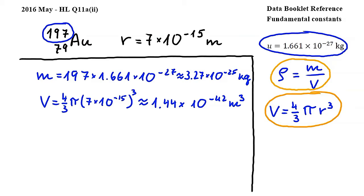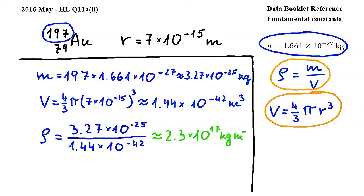Please note that this equation is not in your formula booklet. Substituting we get rho is equal to 3.27 times 10 to the power of negative 25 over 1.44 times 10 to the power of negative 42. Carrying out this calculation and rounding gives us approximately 2.3 times 10 to the power of 17 kilograms per cubic meters.